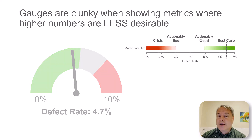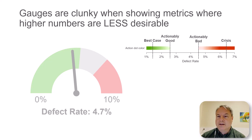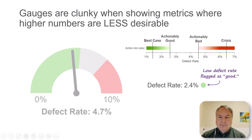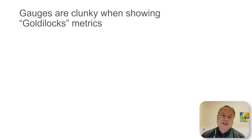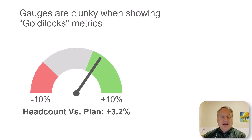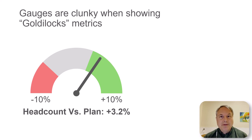Whereas with action dots, when we have metrics where higher numbers are less desirable, we just flip things around. As defect rate gets higher it goes red; if it gets lower it goes green. On the dashboard it makes sense — a low defect rate is flagged as good, a high defect rate is flagged as bad — but the user doesn't really have to worry about what kind of metric it is. They just look for red and green dots. Gauges are also kind of clunky when showing what I call goldilocks metrics — something like headcount versus plan — where we basically want the metric to be as close to zero as possible. We don't want to hire too many people and we don't want to hire too few — just right, hence the goldilocks name.